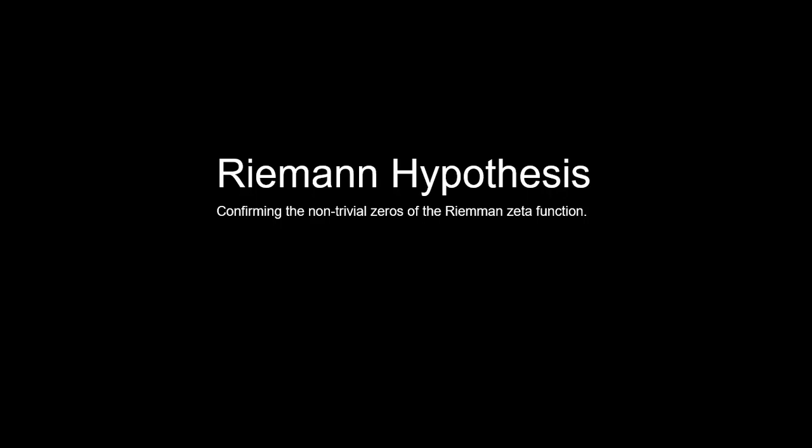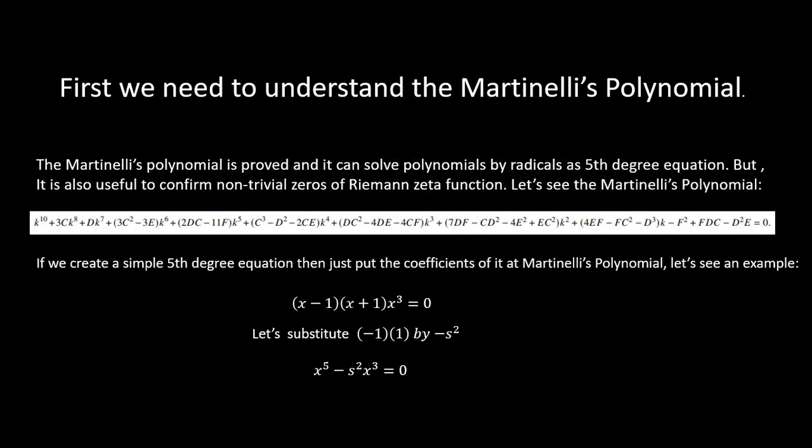Riemann hypothesis: confirming the non-trivial zeros of the Riemann zeta function. Let's start our presentation. First, we need to understand the Martinelli's polynomial. The Martinelli's polynomial is proved and it can solve polynomials by radicals as a 50-degree equation, but it is also useful to confirm non-trivial zeros of the Riemann zeta function.